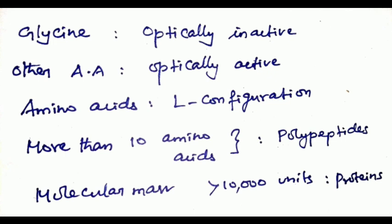When the number of amino acids is more than 10, it is called polypeptides. Polypeptide with more than 100 amino acids, that is called residue, having molecular mass higher than 10,000 units, is called proteins. Peptides and proteins are polymers of amino acids in which the amino acid unit is called residue.